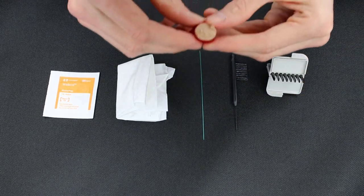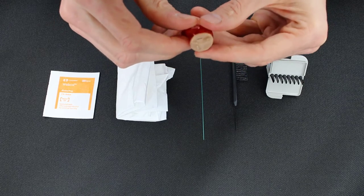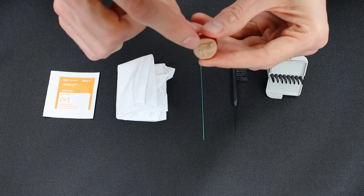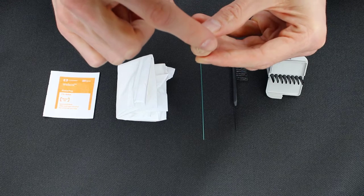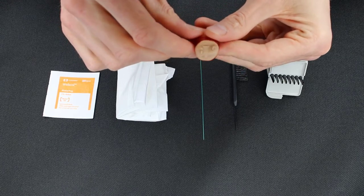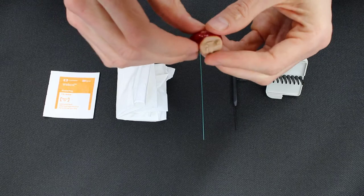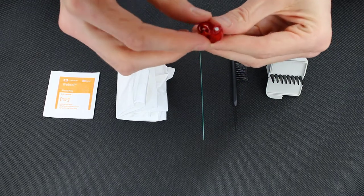For an in-the-ear device like this, we have a few things that we need to keep in mind. This part right here in tan color is essentially what's gonna be showing outside of the ear, and then everything in red is the portion that goes inside of the ear.